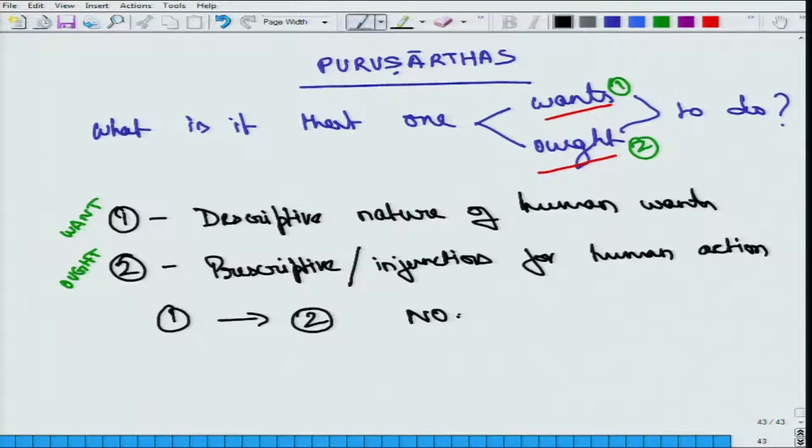That well, 2 is a separate independent domain that is to be worked out by the theoreticians or the intelligentsia of the time. So Purusharthas are claiming that giving us a prescriptive or an injunctive notion for human action. And they are informed, 2 is informed by 1 but not determined by it.